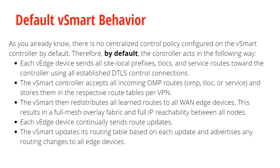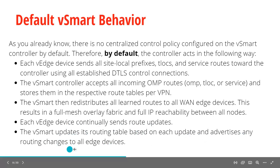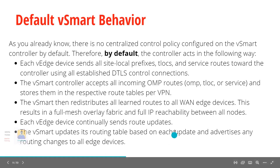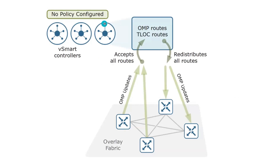Each vEdge device continuously sends route updates. vSmart updates the routing table based on each update and advertises that routing information to all vEdge devices — just like OSPF DR and BDR. In OSPF, you can't talk directly; you send routes to DR and BDR, and DR/BDR sends consolidated route information to everybody. Here also, vEdge devices can't talk to each other directly; they go through vSmart. By default with no policy configured, vSmart accepts all routes and redistributes all routes into OMP.